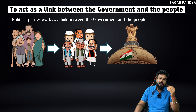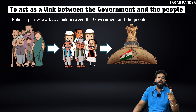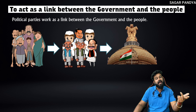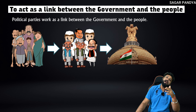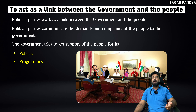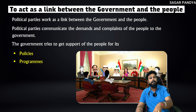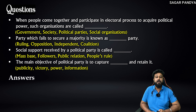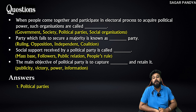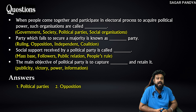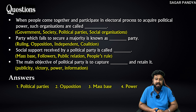Political parties act as a link because you cannot go directly to the Prime Minister with your demands. You need to tell your MPs and MLAs — your political party representatives — who then convey demands to the government. So when people come together and participate in the electoral process and acquire political power, such organizations are called political parties. The party which fails to secure a majority is known as the opposition party. Social support received by a political party is known as mass base, and the main objective of a political party is to capture power.